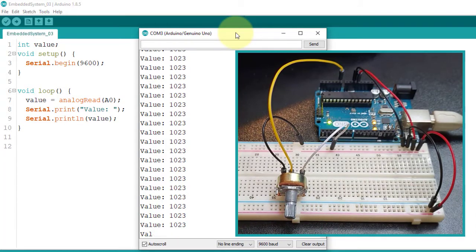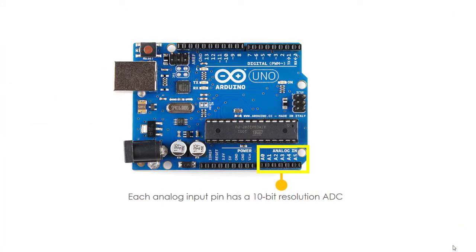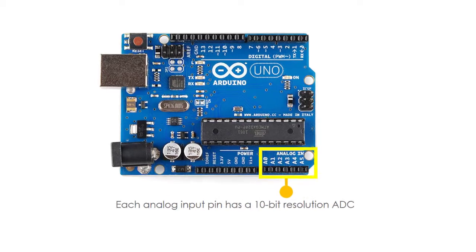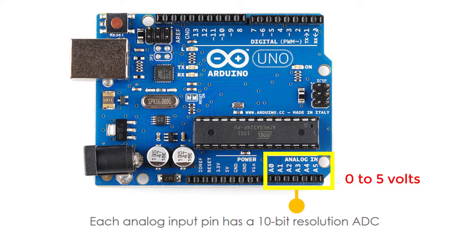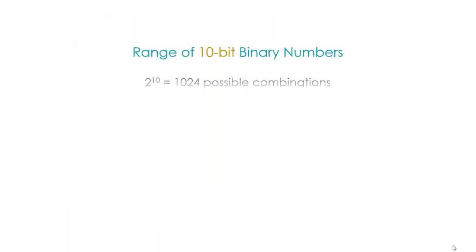Let me explain this in a simpler way. Although there is a much more complex thing happening behind the scene, each of the analog input pins of the Arduino Uno is capable of reading an analog signal in terms of volts, and then converting it to an equivalent 10-bit digital signal. It simply says that each analog input pin has a 10-bit resolution ADC or analog to digital converter. So, if we have to read a voltage from 0 to 5 volts in one of the Arduino Uno's analog input pins, it will be converted into a range of 10-bit binary numbers.